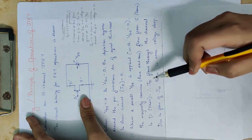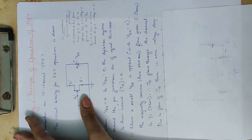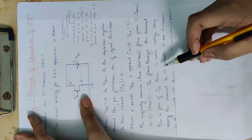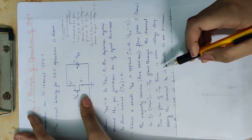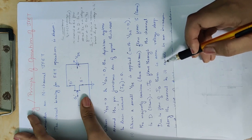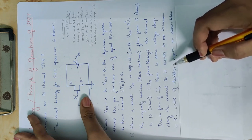Therefore, ID flows through the channel. The majority carriers — that is, the electrons — flow from source to drain. We now have an output current. Due to the flow of ID, there will be some voltage drop across the channel.